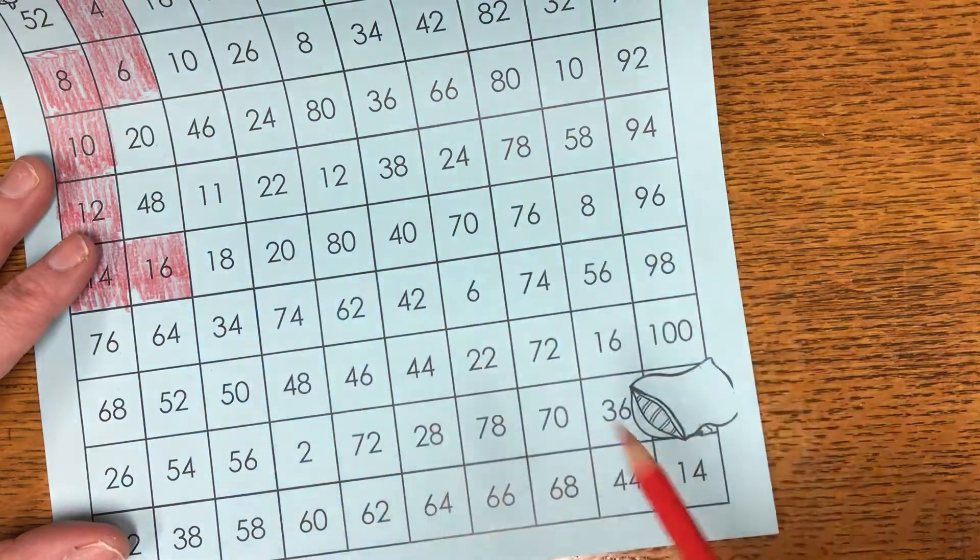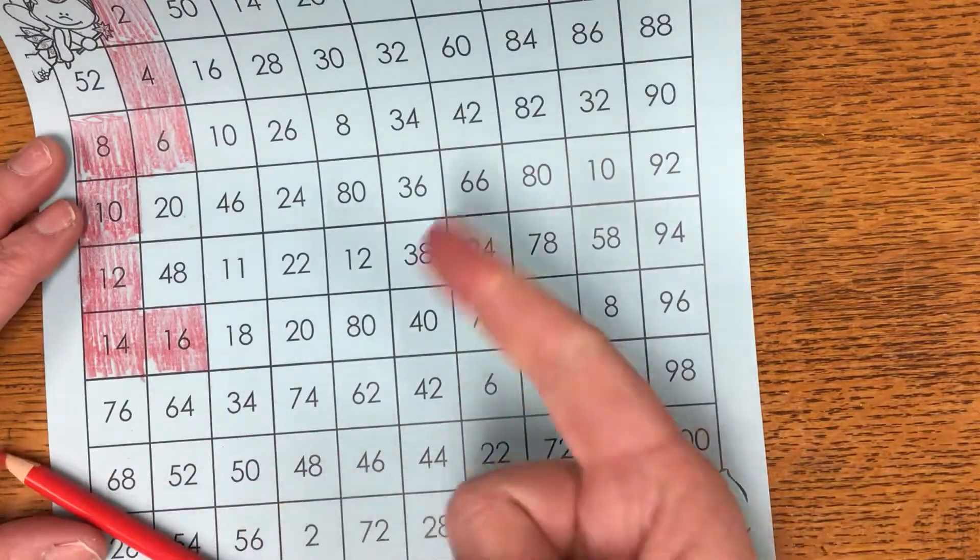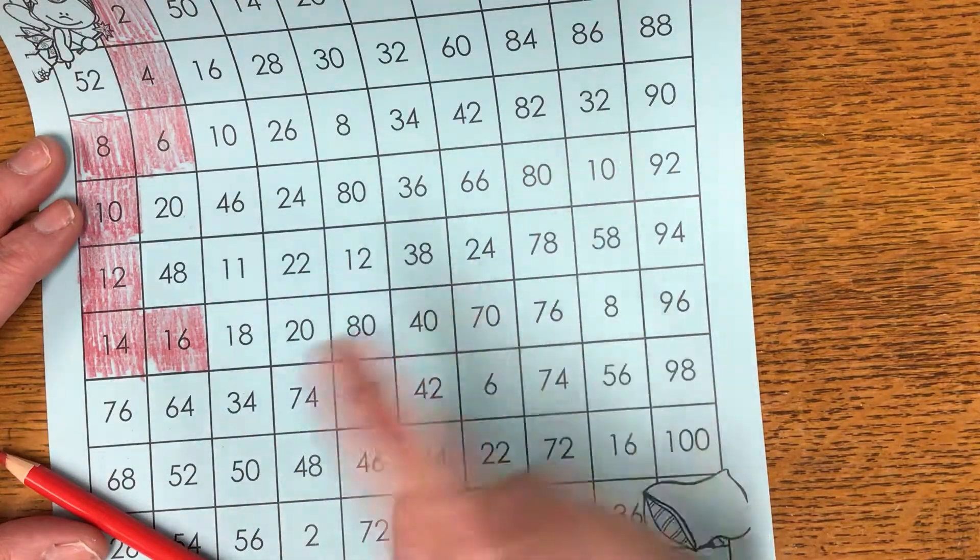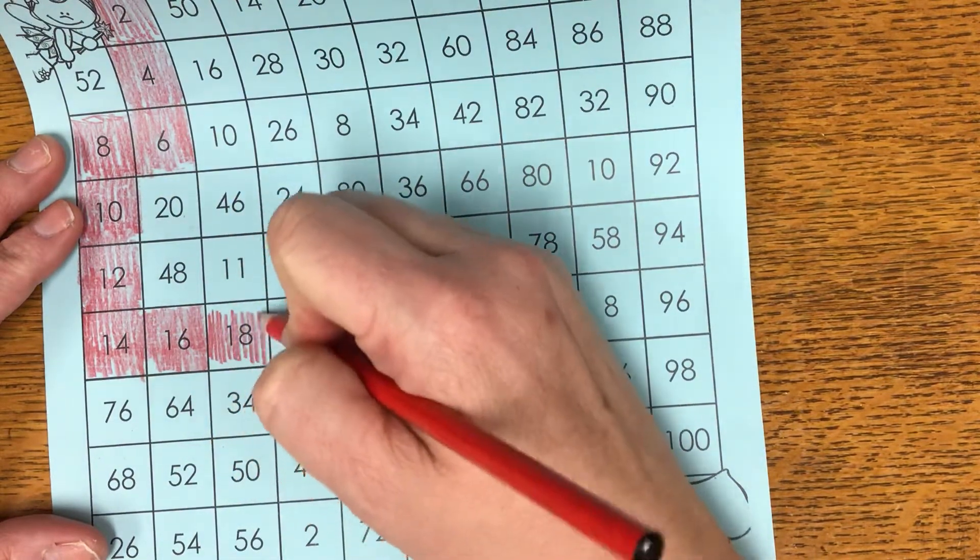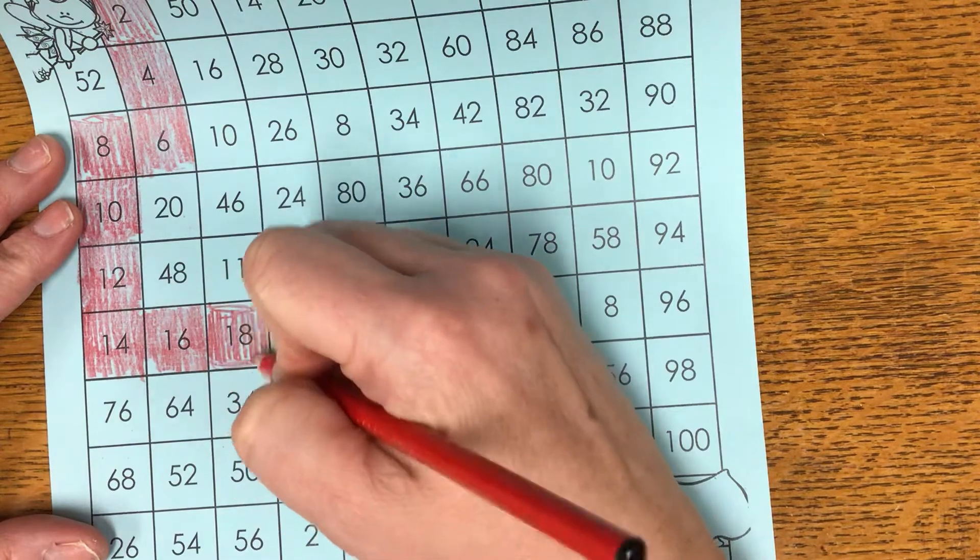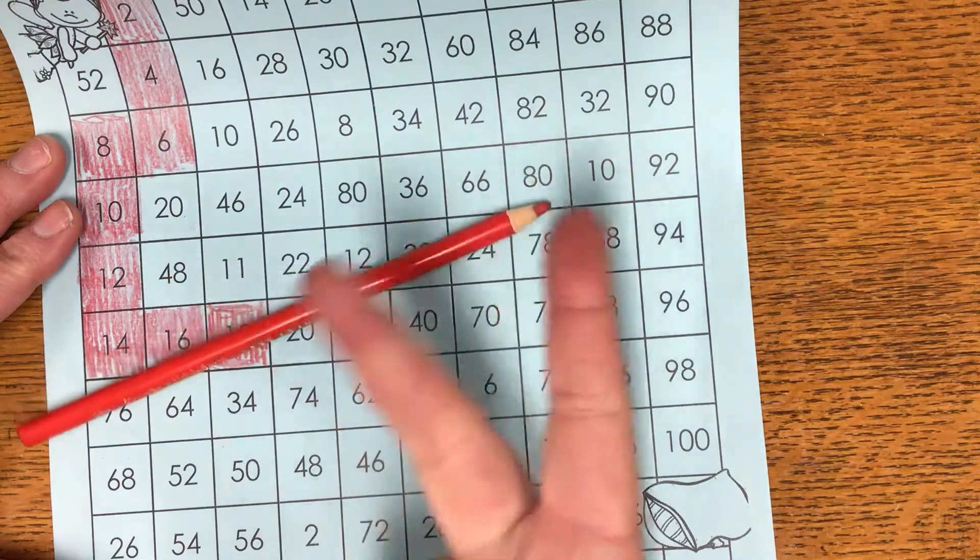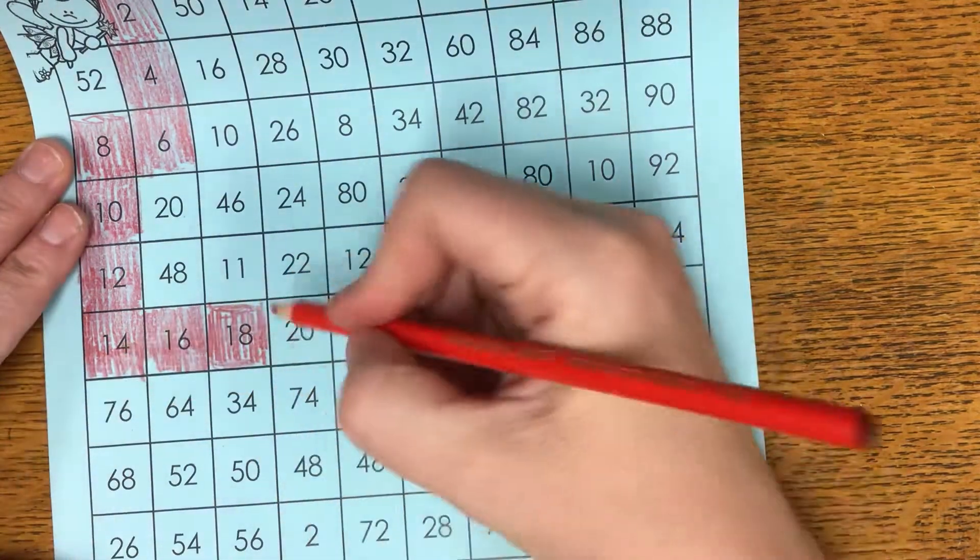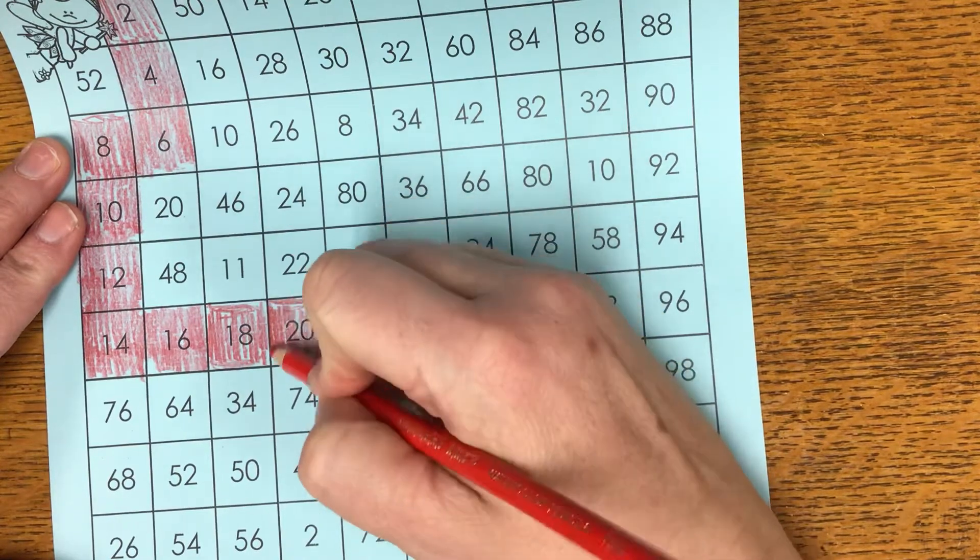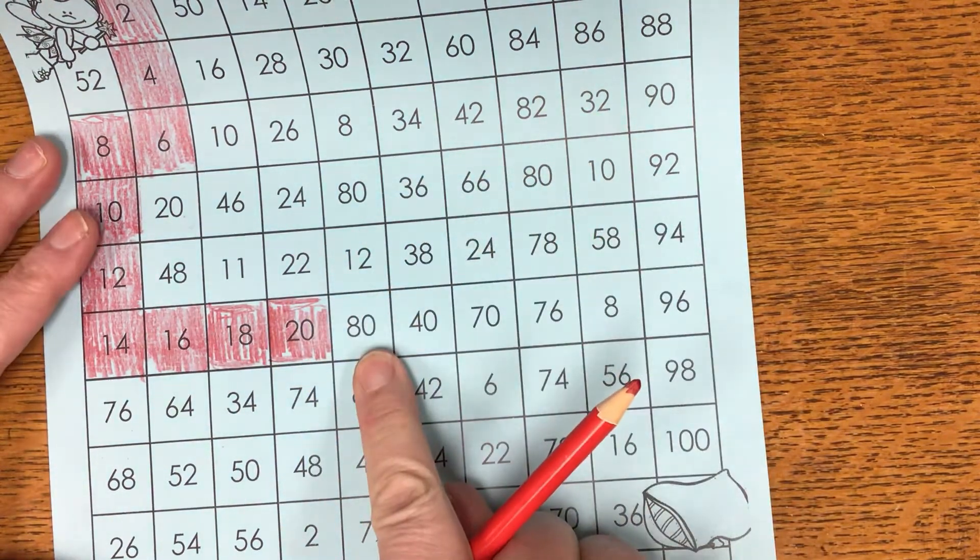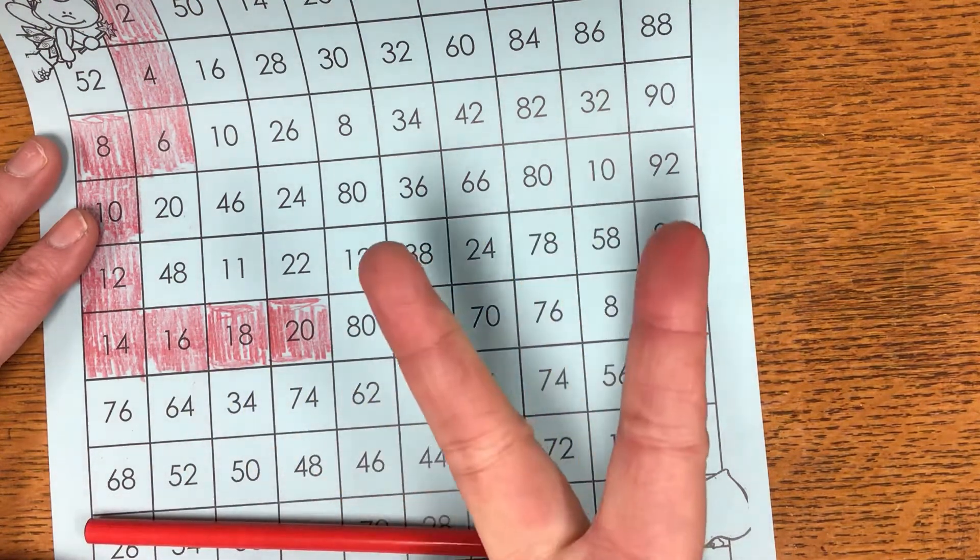So we're at sixteen, seventeen, eighteen. Look at that. Eighteen's right there. Eighteen plus two more. Eighteen, nineteen, twenty. Uh-oh, there's an eighty there. That means I'm going to be taking a corner. Twenty, twenty-one, twenty-two.